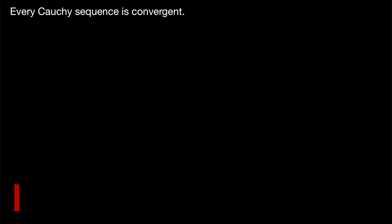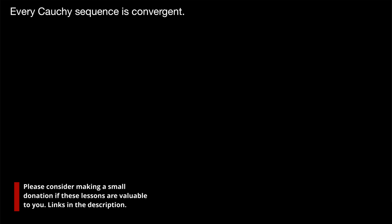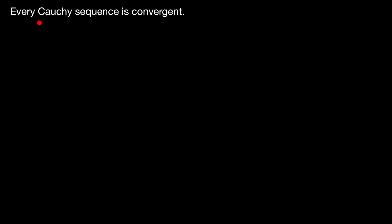We have finally arrived at the final challenge in our first look at Cauchy sequences. We want to prove that every Cauchy sequence is convergent. In a previous lesson, we proved that convergent sequences are Cauchy, so after this, we will have proven that a sequence converges if and only if it is Cauchy. Let's waste no time and get right into the proof of this result.